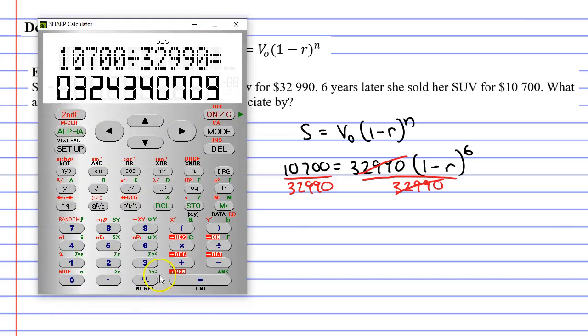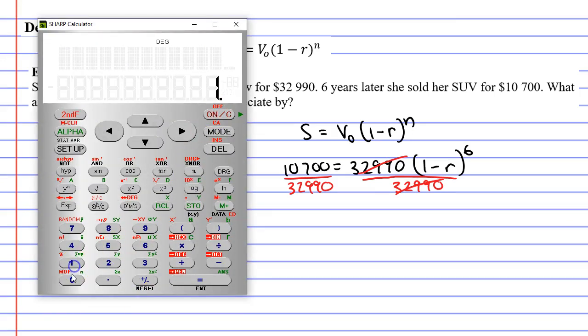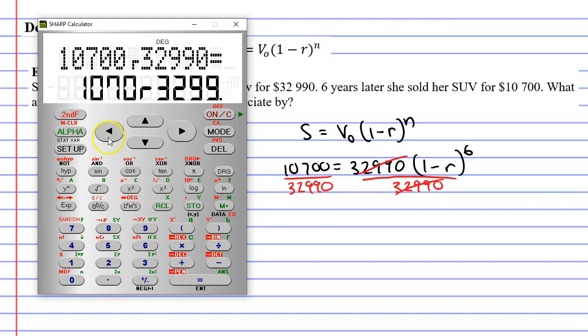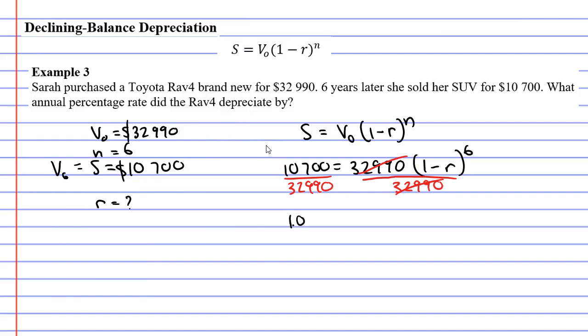In fact, we could actually try and simplify the fraction. So $10,700 using the ABC button over $32,990 equals, and we get a simplified version of this fraction. So we can write it as $1,070 over $3,299. This is going to equal 1 minus R to the power of 6.